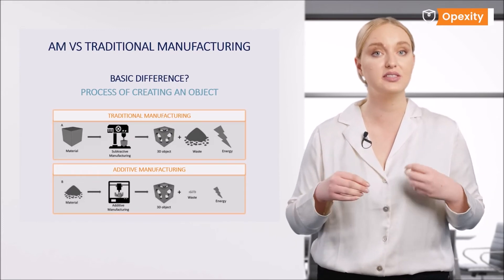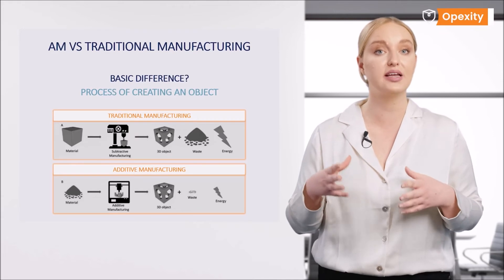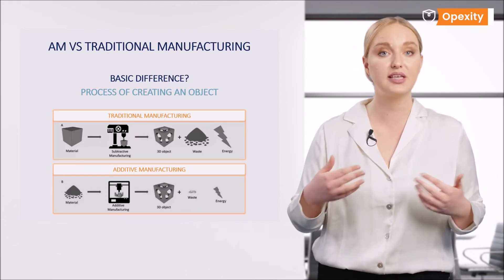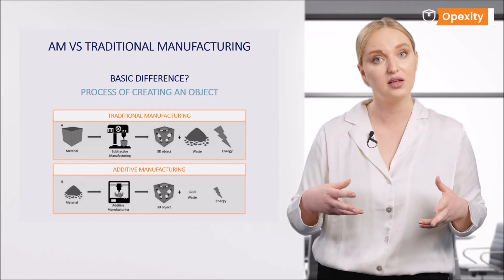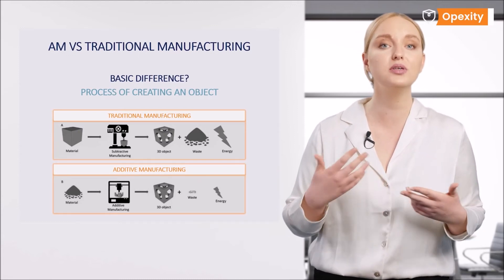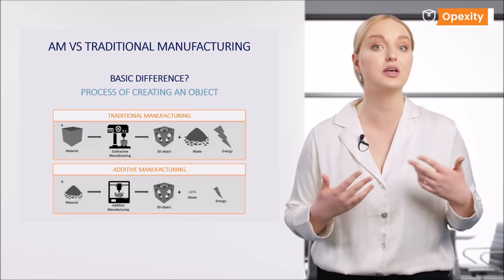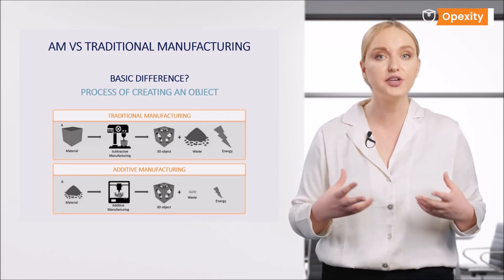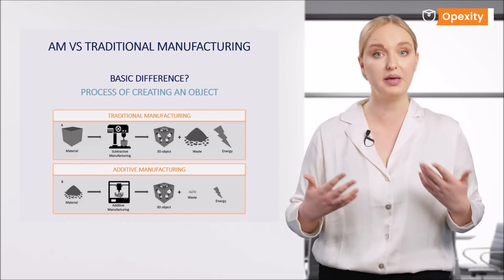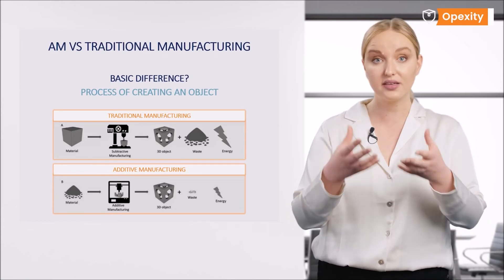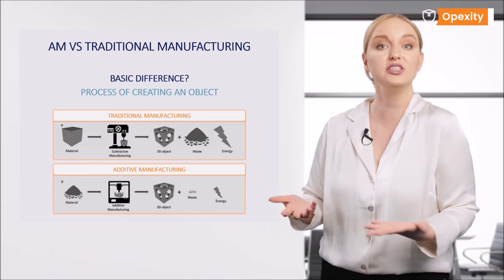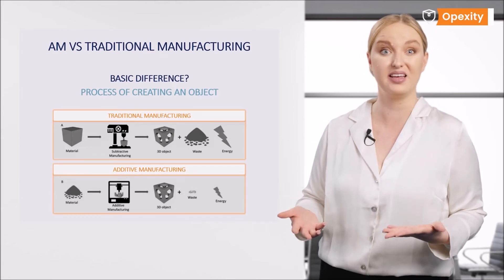On average, estimates state that 50% energy and up to 90% material can be saved through the process of AM. Why such savings? Because since printed objects can be hollow inside, you can accurately determine where the material should and shouldn't be during construction — like this ball made of numbers and letters. Imagine if you had to make it in wood.